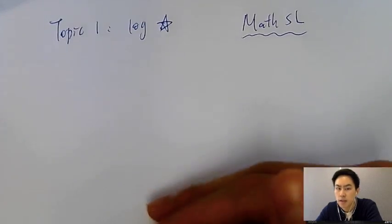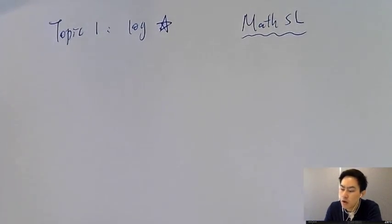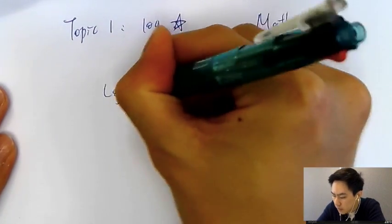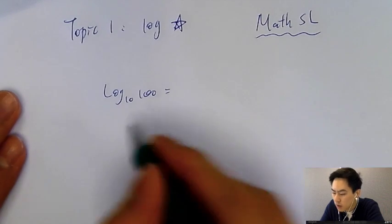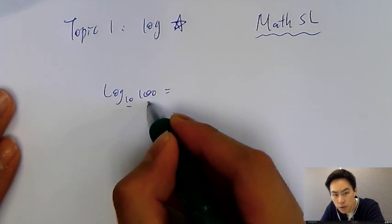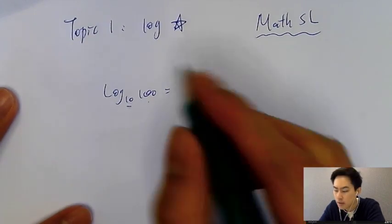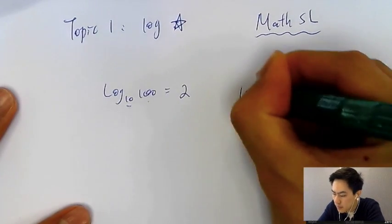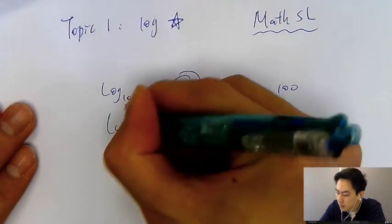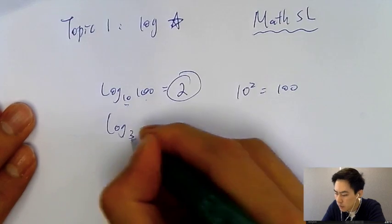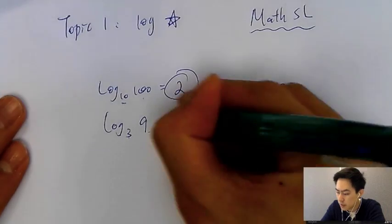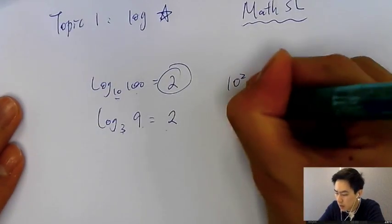First, I want to make sure you understand what log means. If I give you log base 10 of 100, log always calculates the power. You just need to think: 10 to the power of what equals 100? That's 10 to the power of 2, because 10² = 100. One more example: log base 3 of 9 — 3 to the power of what equals 9? Obviously 2, because 3² = 9.